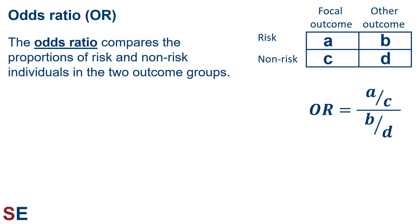Our second way to measure the relationship between risk and outcome is by using the odds ratio, often abbreviated as OR. The odds ratio compares the proportions of the risk and non-risk individuals in the two outcome groups. The numerator calculates the ratio of the risk and non-risk individuals for the focal outcome group, and the denominator calculates the ratio of the risk and non-risk individuals for the other outcome group. If the individuals with the focal outcomes are more likely to have the risk factor, then the numerator will be larger and the odds ratio value will be larger than 1. If the outcome has nothing to do with the ratios, the odds ratio will be approximately equal to 1. And if the individuals with the focal outcomes are less likely to have the risk behavior, then the numerator will be smaller and the odds ratio value will be less than 1.